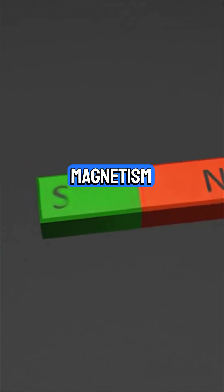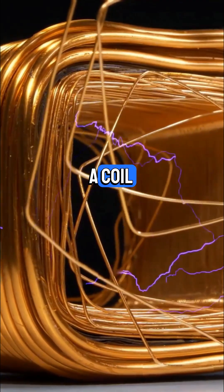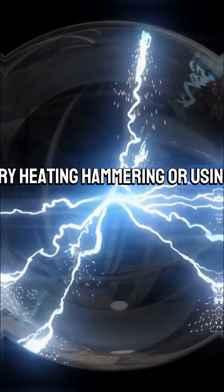A permanent magnet keeps its magnetism. You can make one by stroking it with another magnet or running a current through a coil. Want to erase that magnetism? Try heating, hammering, or using AC current.